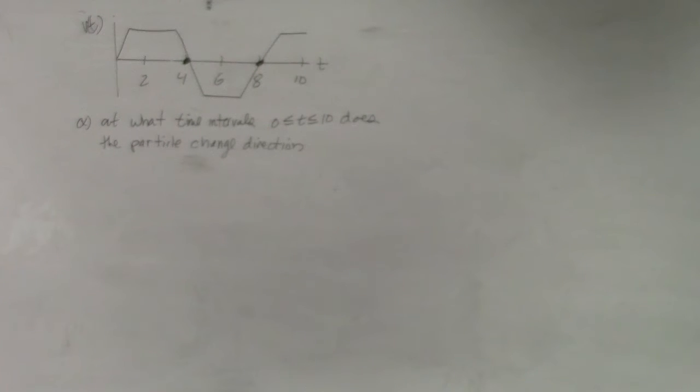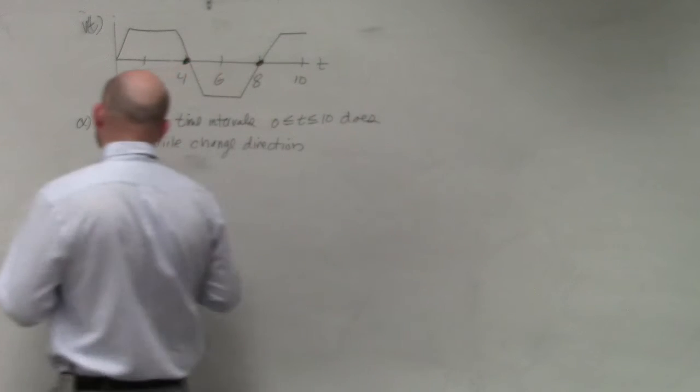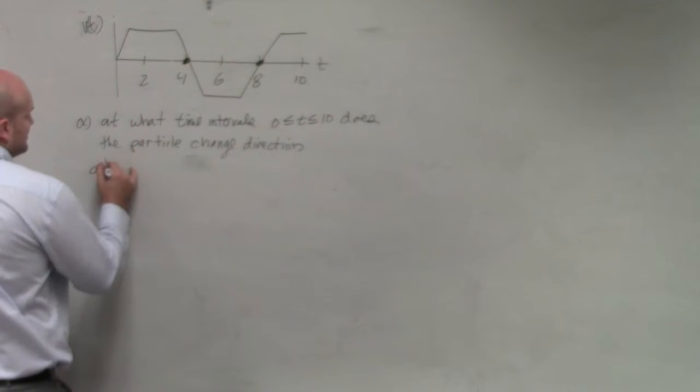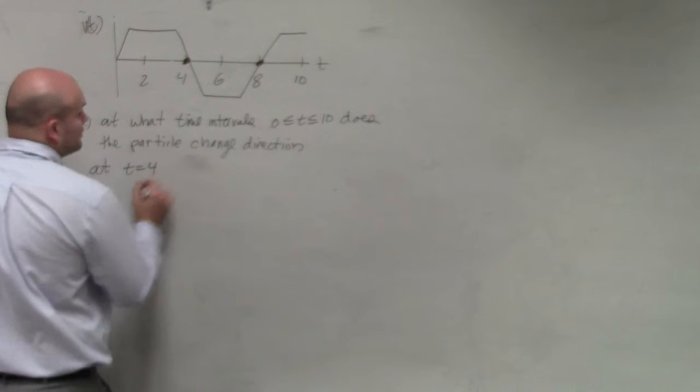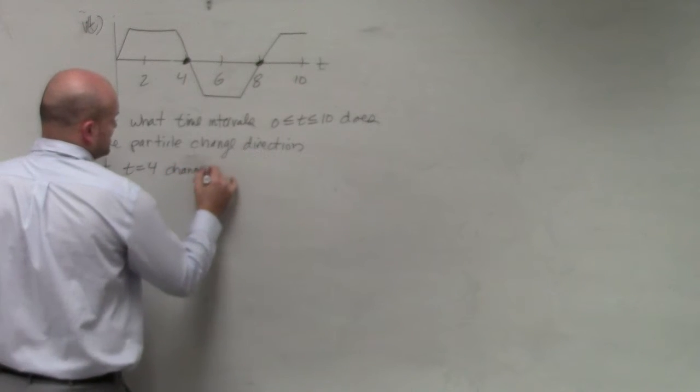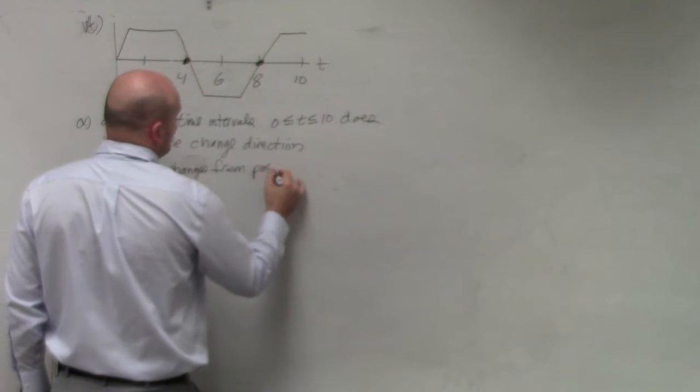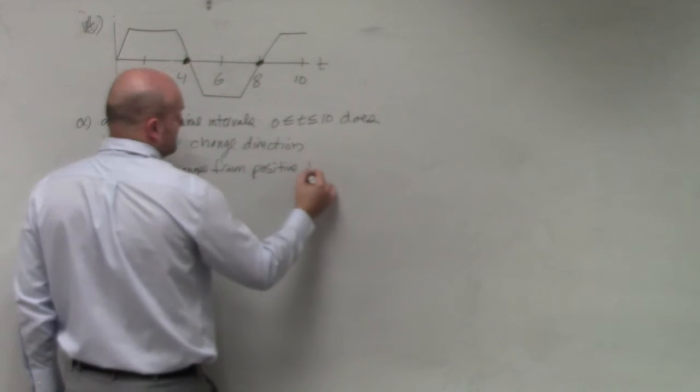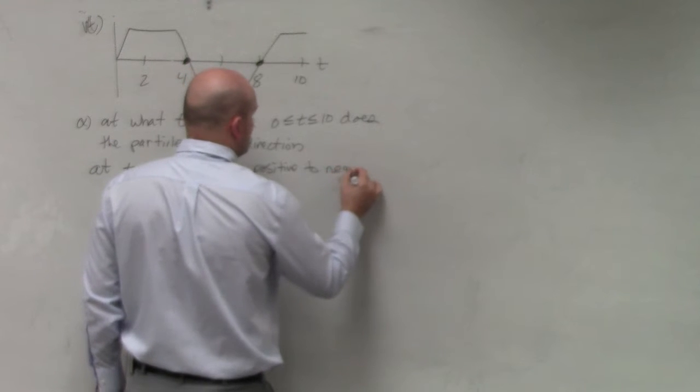The reason why it changes is we can say that at t equals 4, my velocity changes from positive velocity to negative.